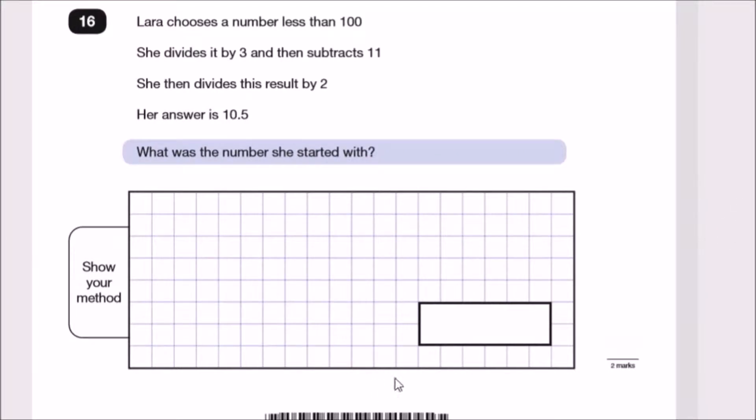So how do we do this one? Laura chooses a number less than 100. Let's pick a number n and say this one is less than 100. She divides it by 3 then subtracts 11. She then divides this answer by 2 and finally ends up with 10.5. What was the number she started with?